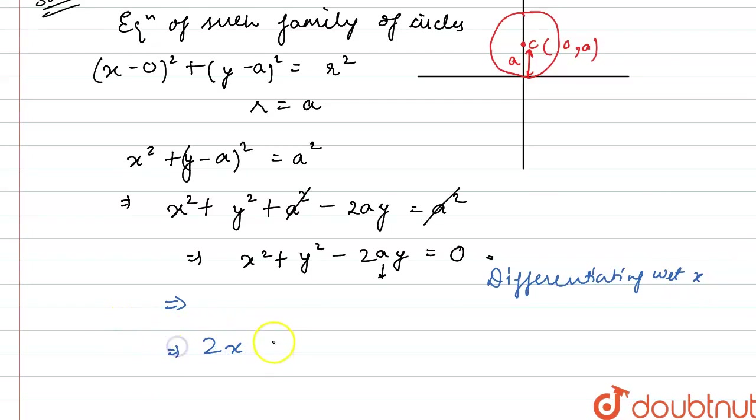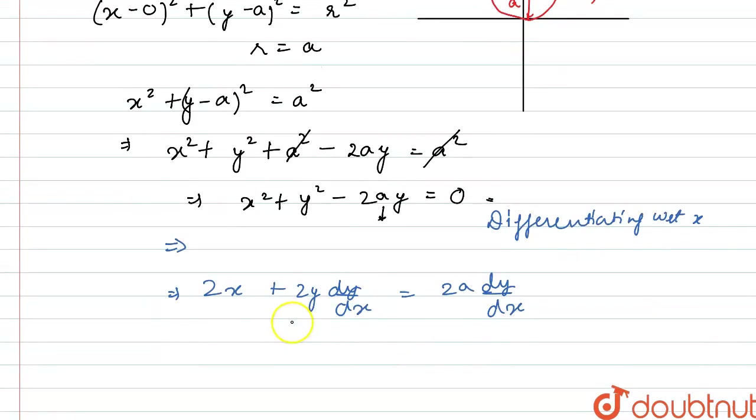2x plus 2y into dy by dx. Yeah, equals, taking this to the right hand side, 2a dy by dx. From here we can get the value of 2ay.